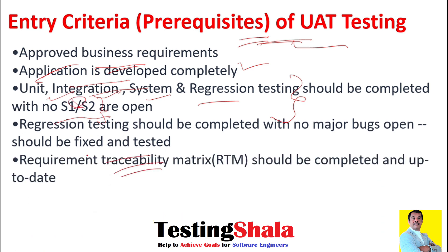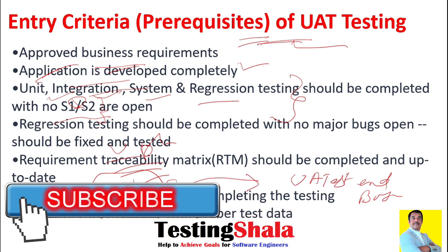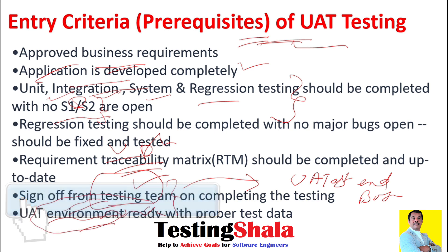The RTM — requirement traceability matrix — should also be completed and up to date, ensuring that everything is covered. There should also be a sign-off from the internal testing team confirming that all kinds of testing have been done. Once that sign-off is received, a separate UAT environment should be ready with all relevant test data as well.